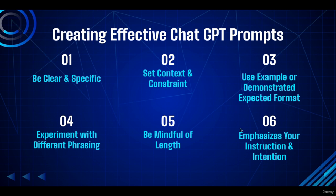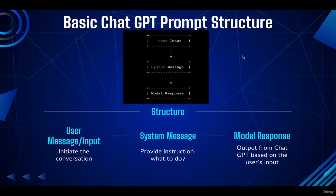The sixth aspect: emphasize your instructions and intentions. Sometimes when people write prompts they don't really specify what they want — they don't say 'ChatGPT, I want you to do this.' That leaves ambiguity and makes ChatGPT uncertain about what you want. It's better to clearly emphasize your instructions or intentions in your prompt so ChatGPT can understand what you actually want and what output you're seeking.